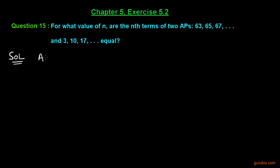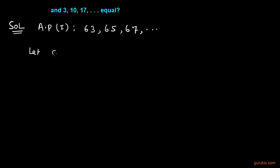Let the first AP be 63, 65, and 67. We let a be the first term and d be the common difference of this AP.